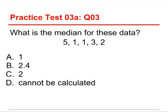Number three: what is the median for these data — five, one, one, three, and two? The choices are one, two point four, two, or cannot be calculated. The answer is two. It works best if you rearrange the data first — in fact, you really have to do that. So rearranged: one, one, two, three, five. When you have an odd number, there's going to be one number right in the middle. In this case it's two, and that's the median. If there were an even number, there would be two near the middle and you would average those.